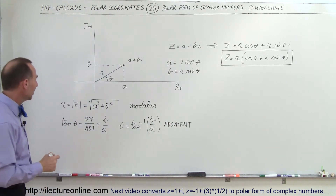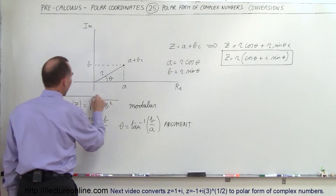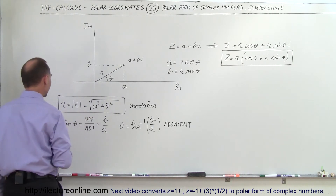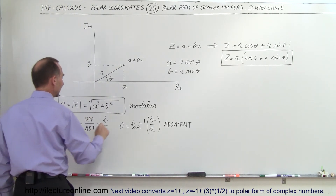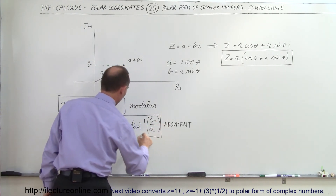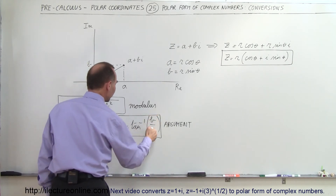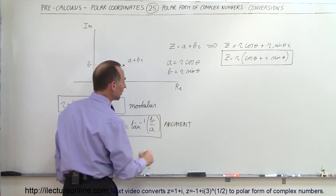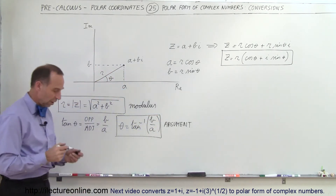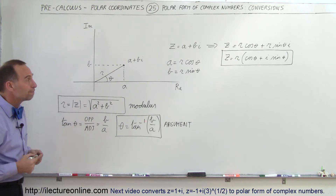So you can see how we can go back and forth: R can be expressed as the modulus of the complex number, and theta can be expressed as the arc tangent of the imaginary part divided by the real part, which is also known as the argument.